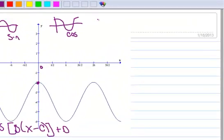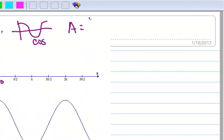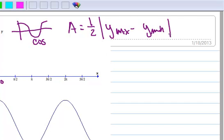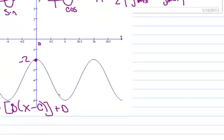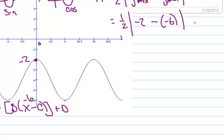Let's calculate our A. Recall A is one-half the absolute value of Y max minus Y min. Our Y max is here at negative 2, and our Y min is down here at negative 6. So that's one-half, absolute value of negative 2 minus negative 6.